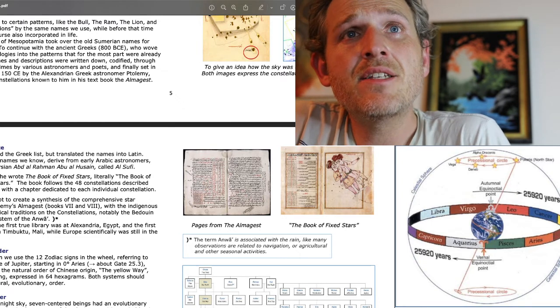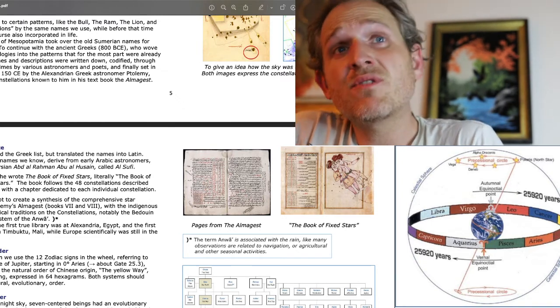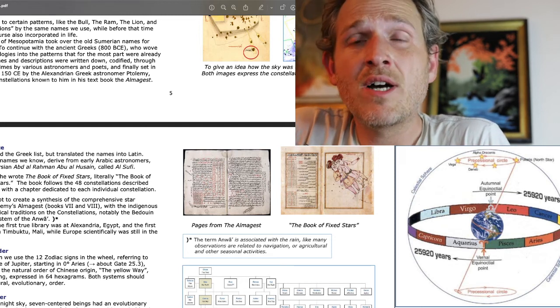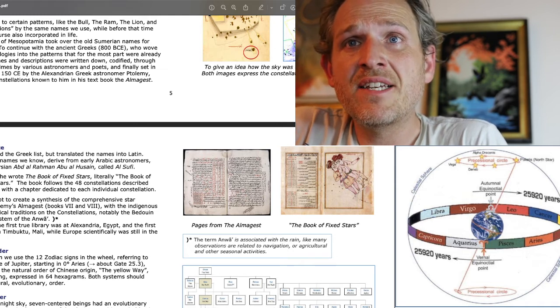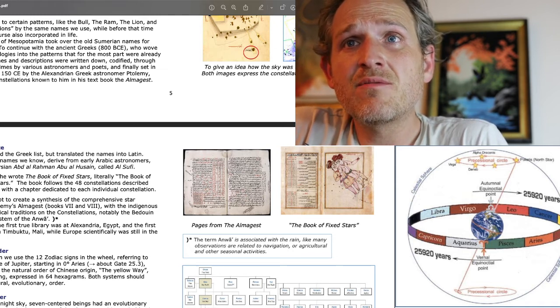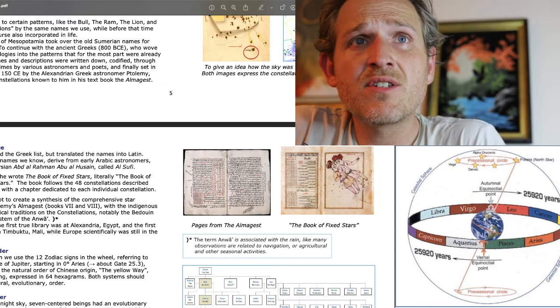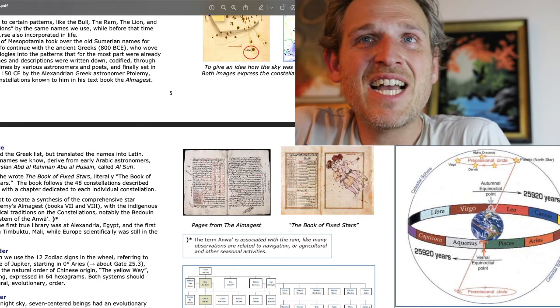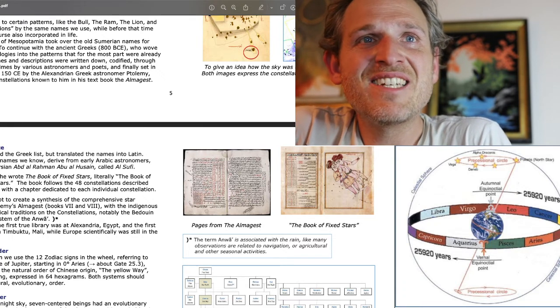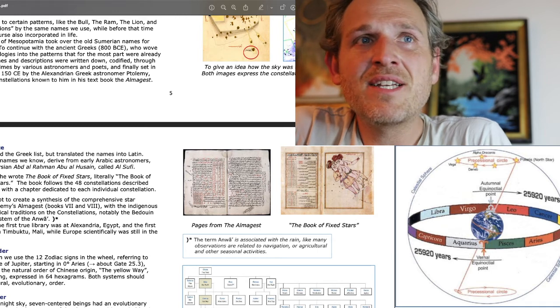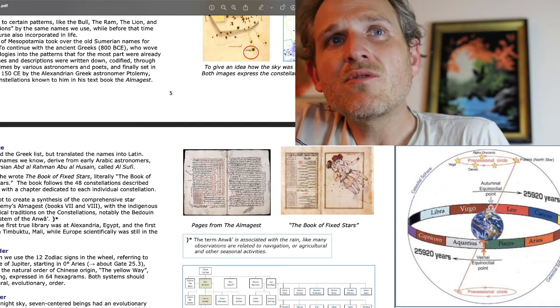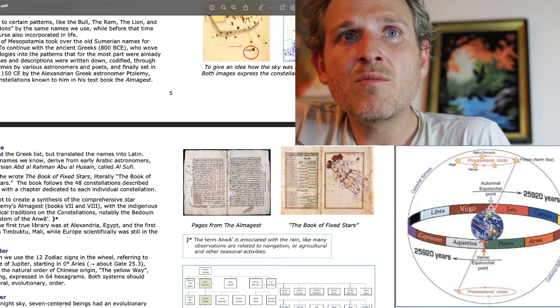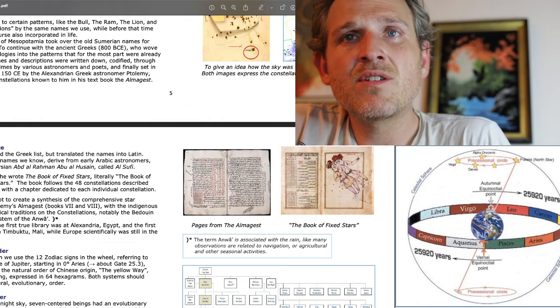It was an attempt to create a synthesis of the comprehensive star catalog in Ptolemy's Almagest, books 7 and 8, with the indigenous Arabic astronomical traditions on the constellations, notably the Bedouin constellation system of the Anwa. The term Anwa is associated with the rain, like many observations related to navigation or agricultural and other seasonal activities, like the neutrino weather. Is it going to rain or not? What is the astrological rain? The star rain. The stars that rain down on us. To remember, the first true library was in Alexandria, Egypt, and the first university was in Timbuktu, Mali, while Europe, scientifically, was still in the Dark Ages.